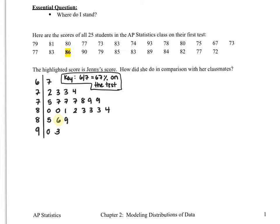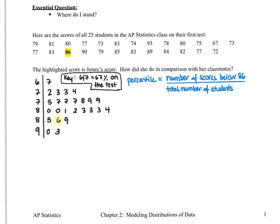What we're interested in is how did Jenny do in comparison with her classmates? We can see it looks like she's in the upper half, so she's probably pretty pleased. We're going to measure a specific type of measurement called the percentile. The percentile is defined as the number of scores below 86 — below what Jenny got — over the total number of students. She scored 86; 21 students scored below her out of 25 total, meaning Jenny scored in the 84th percentile.